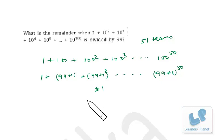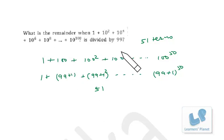So the remainder will be 51. When this expression is divided by 99, the remainder is 51.